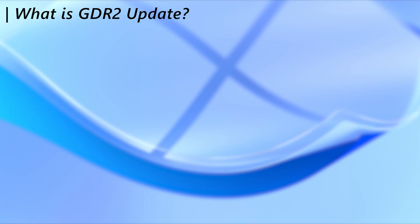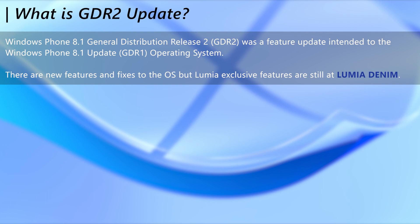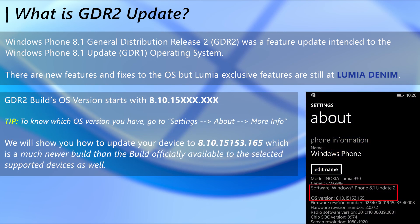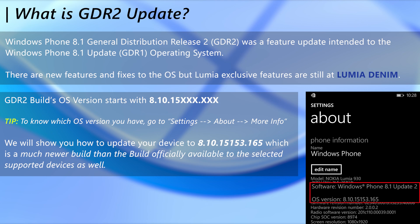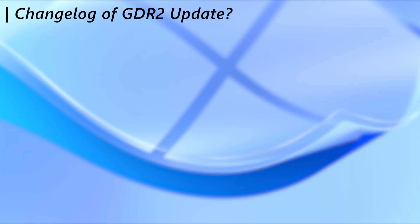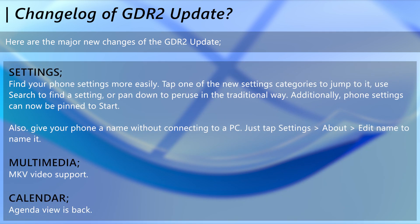First, let's see what is this GDR2 update. This is the second major update to the Windows Phone 8.1 OS, intended to update over GDR1. This update also carried major changes to the system, but Lumia features stayed in Lumia Denim. The GDR2 build starts with number 15, and using this guide we will show you how to install the 8.10.15153.165 build in your Windows Phone.